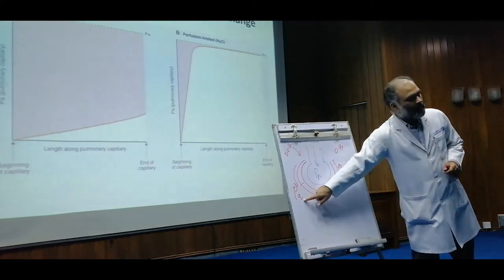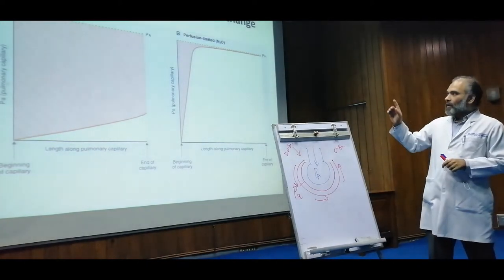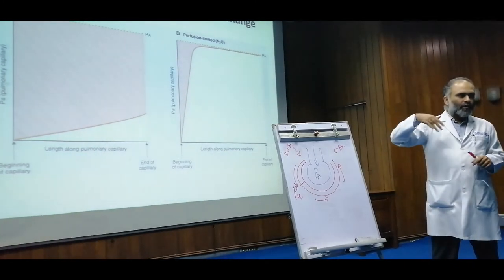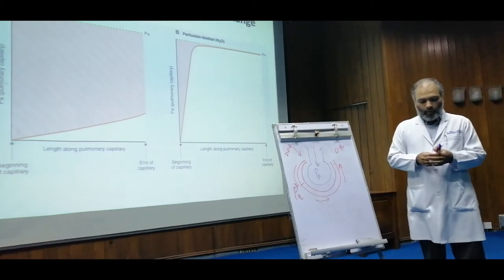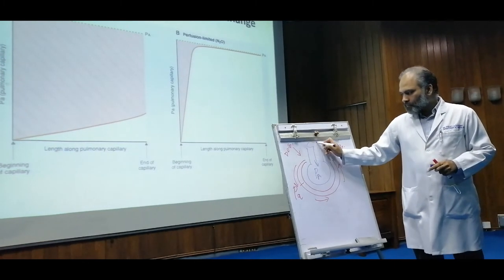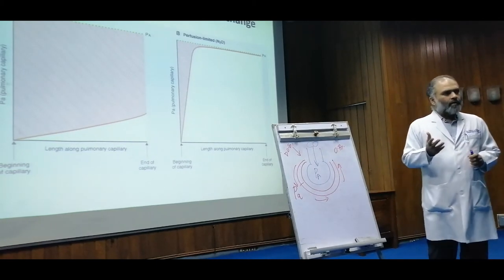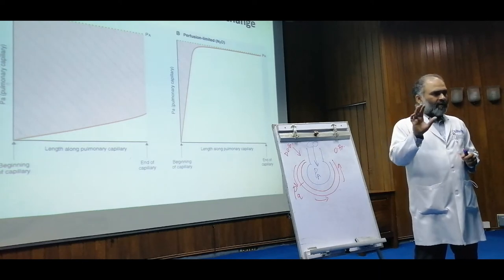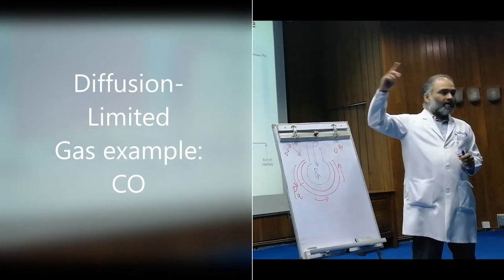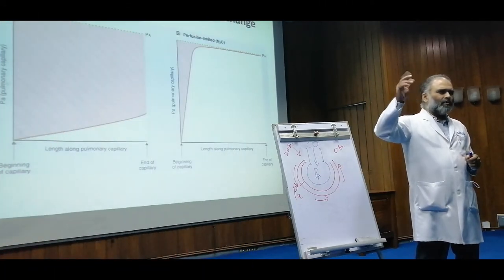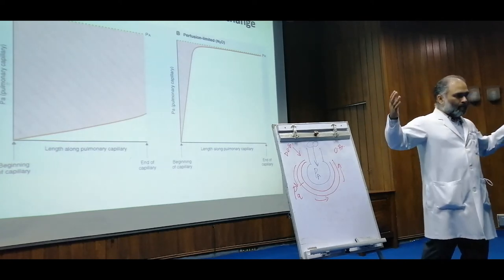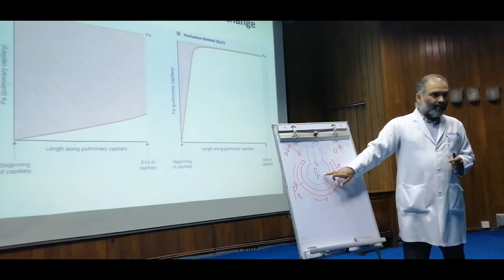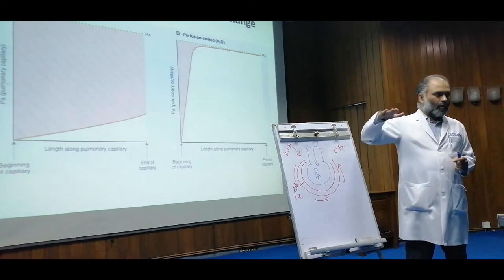Now let's look at how carbon monoxide behaves in this setup, and then compare it to how nitrous oxide behaves. Let's start with carbon monoxide. In the single breath test, we inhale carbon monoxide. It's a trace gas in the atmosphere at about 0.00-something concentration, so it's not normally injurious. But let's assume we have inhaled one single breath of concentrated carbon monoxide, so the level of CO inside the alveolus has gone up.